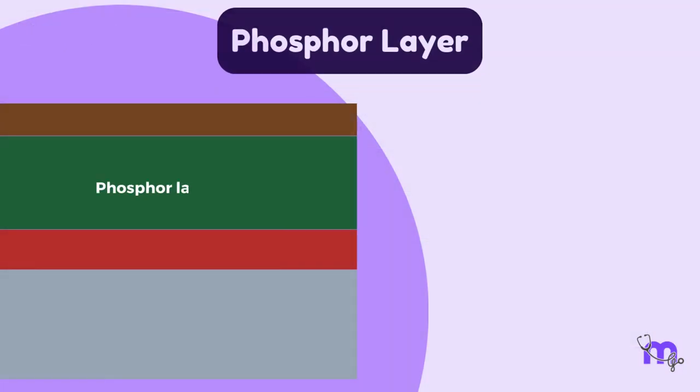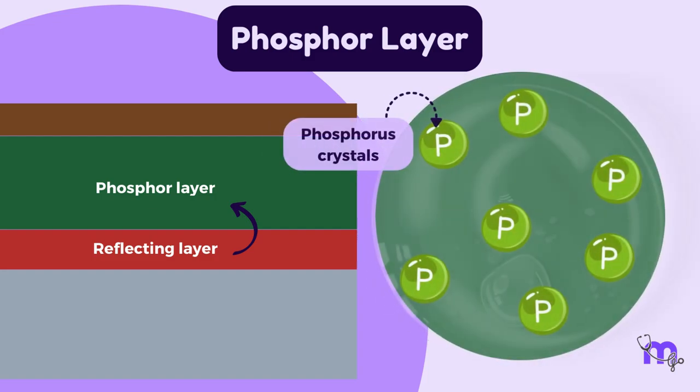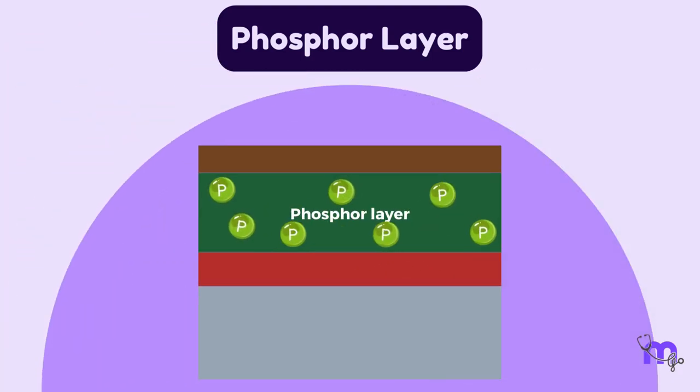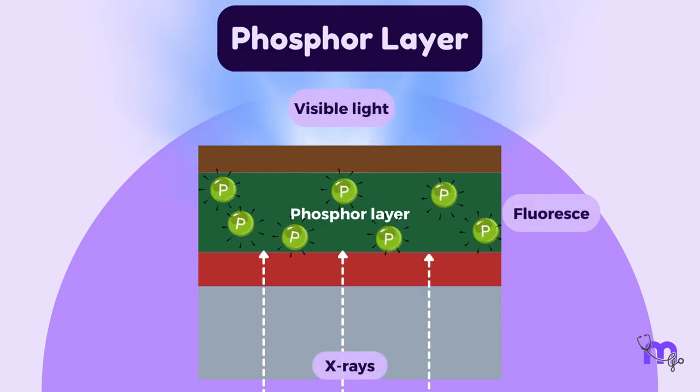The third layer is the phosphor layer, placed over the reflecting layer. It contains phosphorous crystals suspended in a polymeric binder. This is the most essential layer, as the phosphor crystals absorb the X-ray photons, fluoresce, and emit visible light.